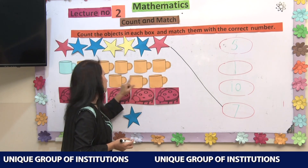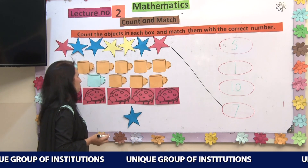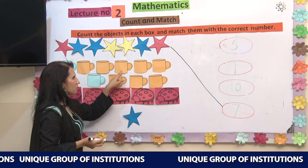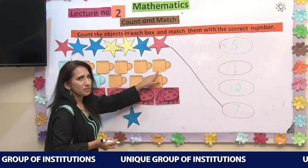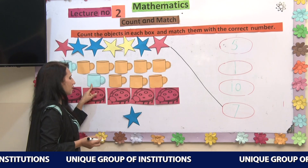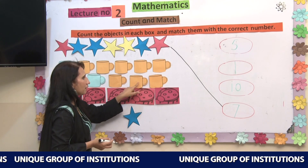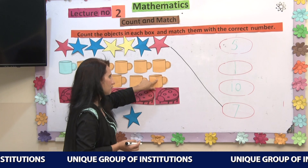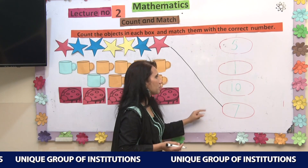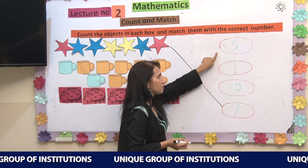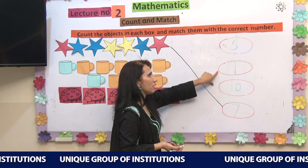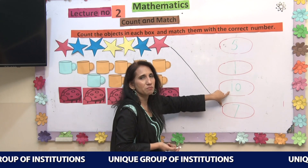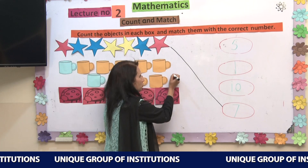Now let's count these mugs: 1, 2, 3, 4, 5, 6, 7, 8, 9, 10. There are 10 mugs. Let's find where number 10 is written — 1 and 0 make number 10. So let's match it.